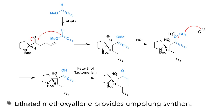The next reaction involved the installation of an enone adjacent to the carbonyl group already present in the molecule. This requires the use of an umpolung synthon — a molecule which reacts with a charge opposite to that which the group typically exhibits. In this case, the carbon bonded to the oxygen, which typically carries a partial positive charge, reacts as a negatively charged nucleophile. This is accomplished by using methoxy allene, deprotonated using butyllithium, which adds to the proline carbonyl group to form a carbon-carbon bond. Upon hydrolysis with hydrochloric acid and tautomerism, the methoxy allene group forms the desired enone. This reaction produces only one diastereomer due to the addition of the nucleophile to the less sterically hindered front face of the molecule.